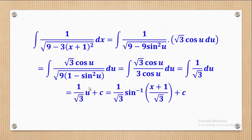Since u was introduced by us, we must eliminate it. We have u = arcsin((x+1)/√3), so substituting back gives the required integral as (1/√3) arcsin((x+1)/√3) + c. Don't forget the constant of integration.